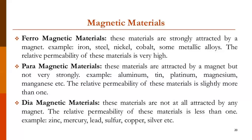The next type of material is diamagnetic material. These materials are not at all attracted by any magnet. There will be no effect if diamagnetic material comes in contact with a magnet — no attractive force between them. The relative permeability of these materials is less than one. Examples are zinc, mercury, lead, sulfur, copper, silver, etc.